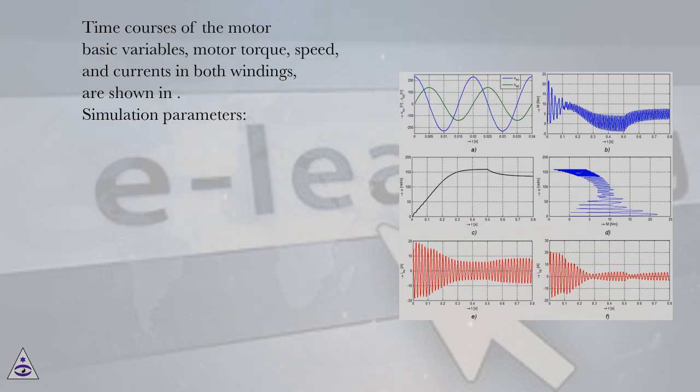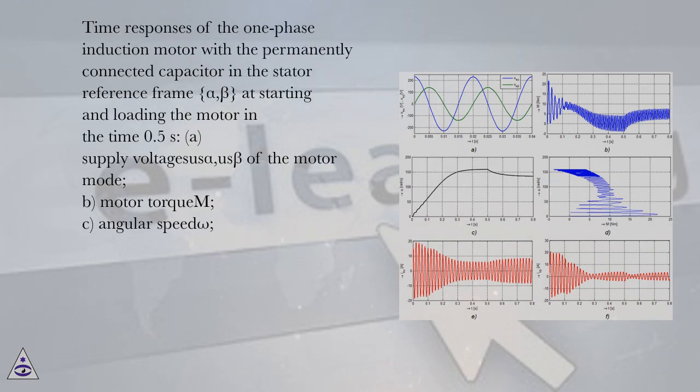Time courses of the motor basic variables: motor torque, speed, and currents in both windings are shown in simulation parameters. Time responses of the one-phase induction motor with a permanently connected capacitor in the stator reference frame (alpha, beta) at starting and loading the motor in the time 0.5 seconds.